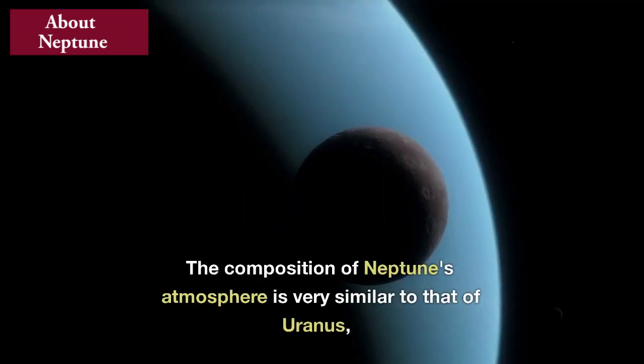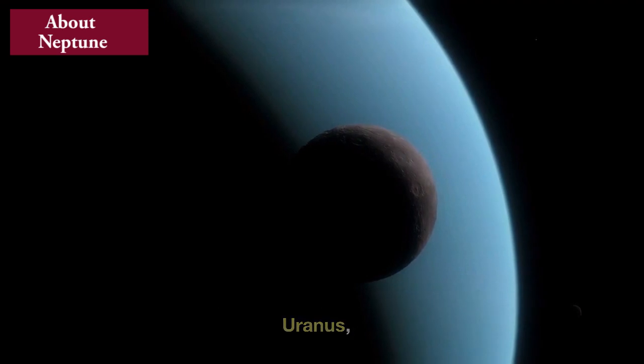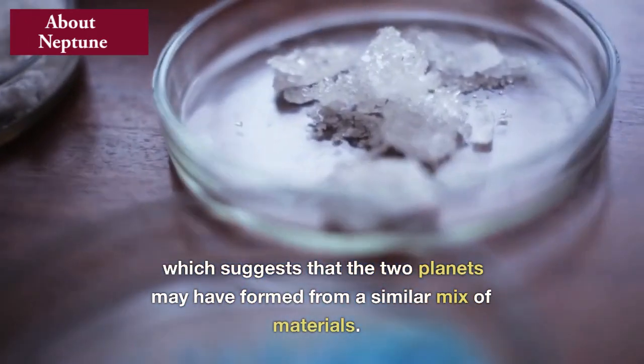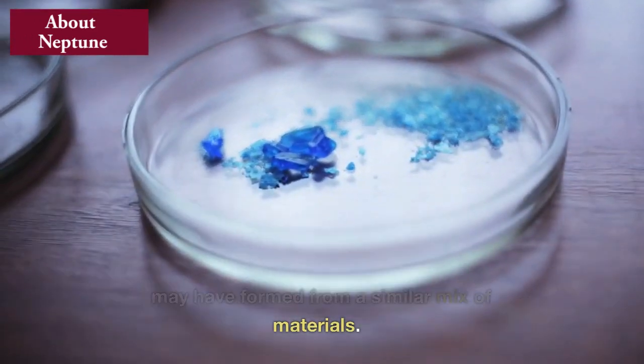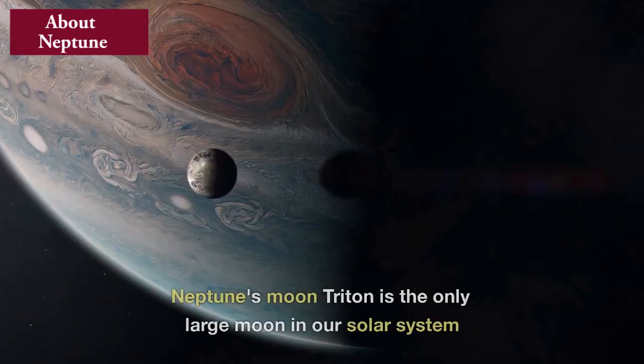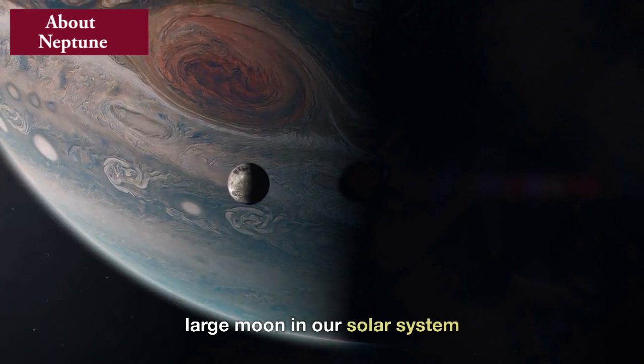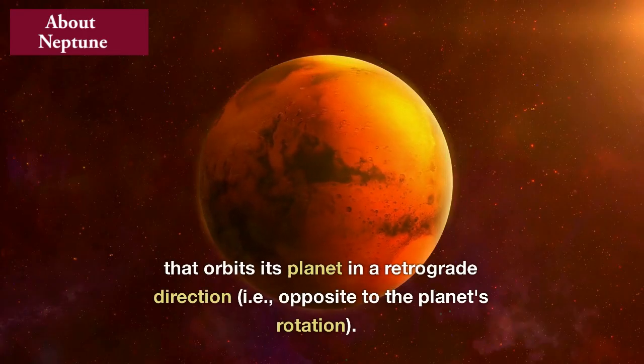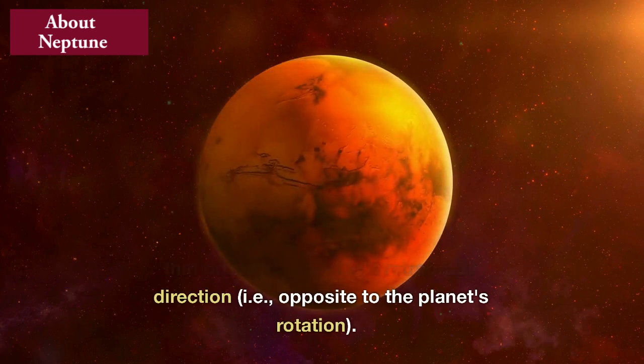The composition of Neptune's atmosphere is very similar to that of Uranus, which suggests that the two planets may have formed from a similar mix of materials. Neptune's moon Triton is the only large moon in our solar system that orbits its planet in a retrograde direction, opposite to the planet's rotation.